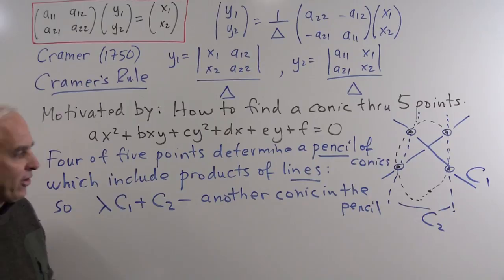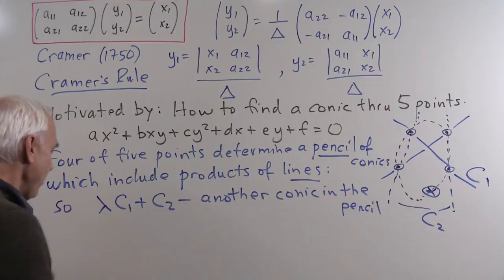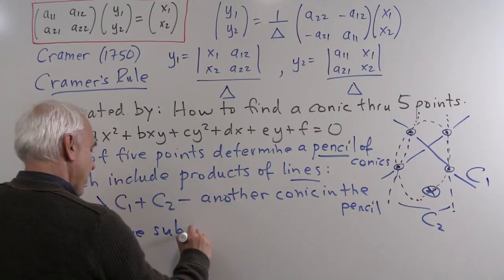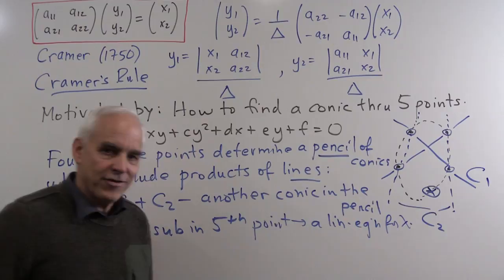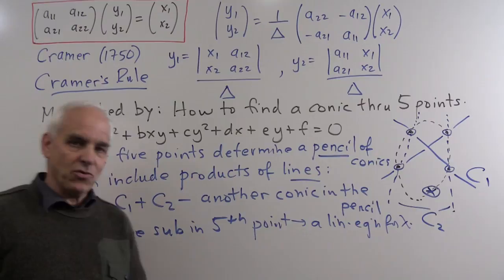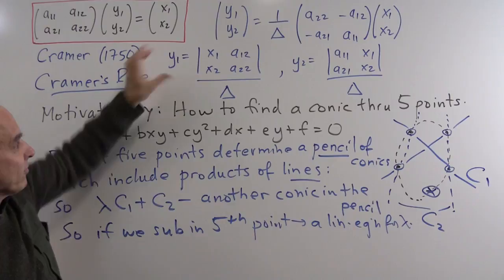So now in order to find the conic that passes through the fifth point, all we have to do is solve one equation — we only need to find the value of lambda. Substituting the fifth point gives a linear equation for lambda. This canonical geometry problem can therefore be solved more efficiently than writing down five equations in five unknowns, though you can certainly do it that way too. This is the historical problem that motivated the important rule given by Cramer.